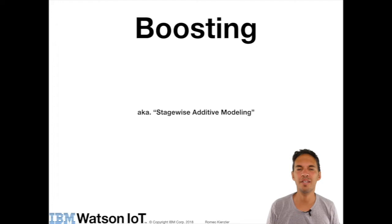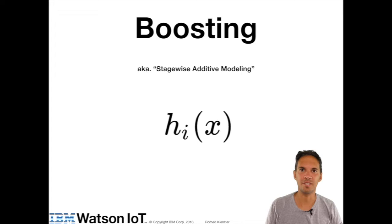So the idea is, in contrast to Random Forest where all the decision trees are trained in parallel, in boosting only one model after the other is trained based on outputs from previous models. Again, this is an ensemble of weak models.